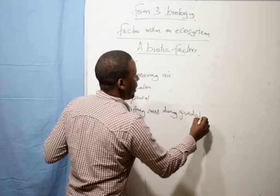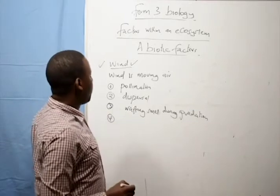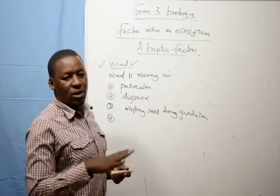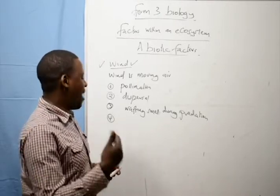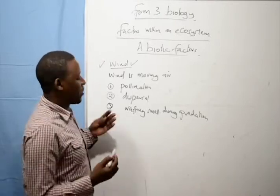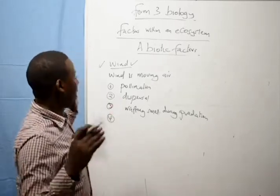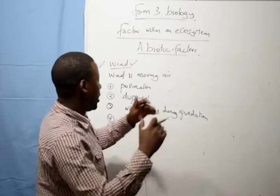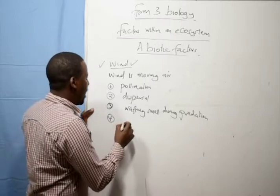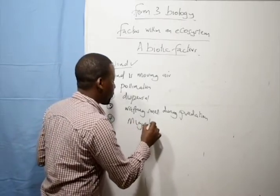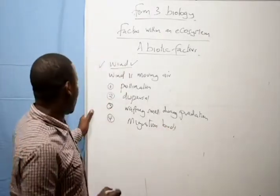It aids in predation. Now again, for birds that move from one continent to another, for example flamingo, they migrate from Africa to Europe. For them to migrate they follow the direction of wind, they spread their wings and they are carried softly to where they are going. Therefore wind aids in migration of birds.